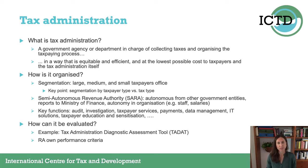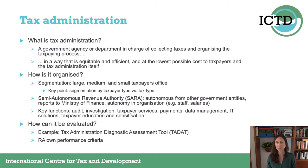How are tax administrations typically organized? They are typically segmented across taxpayer types, so they have an office for large taxpayers and one for medium and small taxpayers, which is different from being organized around tax types. In the past, some tax administrations had separate offices for indirect taxes, retail sales tax, or corporate income tax. Over time there was a switch from organization around tax types to organization around taxpayer types, so now taxpayers only deal with one office handling all different tax types.